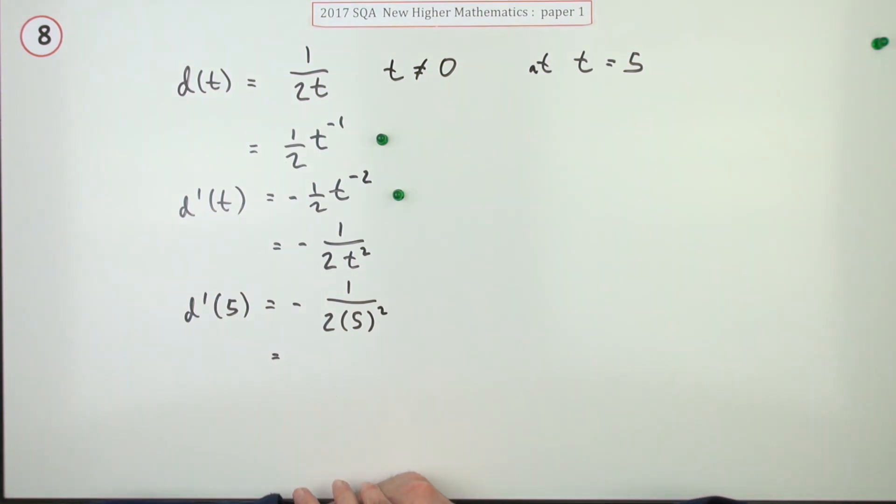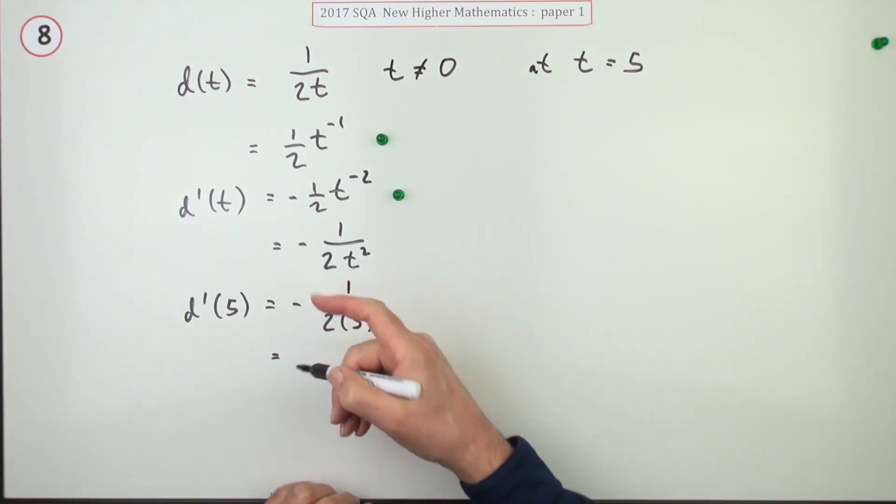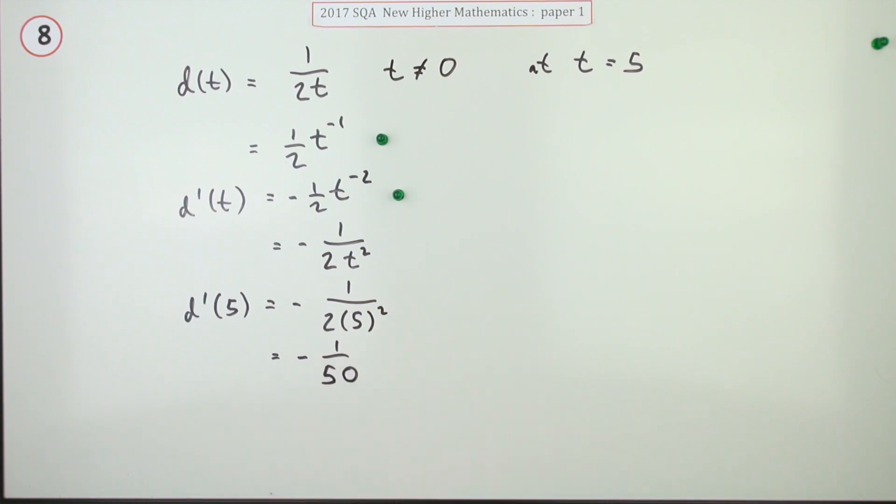One over two times five squared. Well it's negative - five squared is 25, square comes first, double it, 50. Negative one fiftieth. That's the last mark.